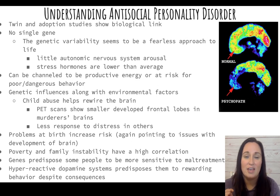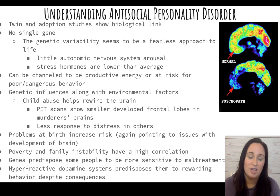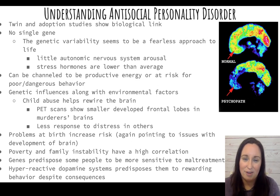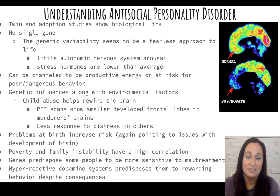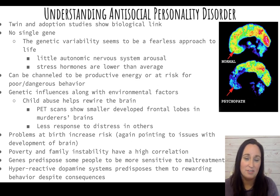People with antisocial personality disorder have a low-responding autonomic nervous system — their stress response is not sensitive and they don't get afraid as easily. Child abuse during brain development can rewire the brain, affecting empathy and especially the frontal lobe, which handles impulse control, planning, and judgment. Criminals with antisocial personality disorder who have committed murder show a smaller, less developed frontal lobe.